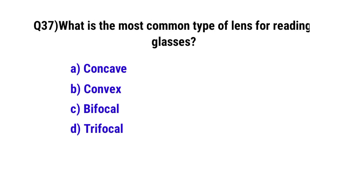Question number 37. What is the most common type of lens used for reading glasses? The correct option is B. Convex.